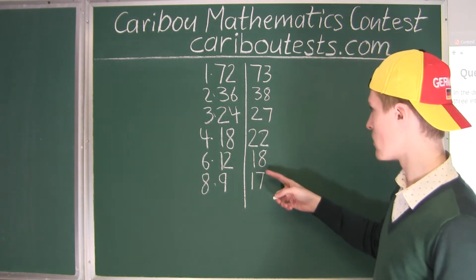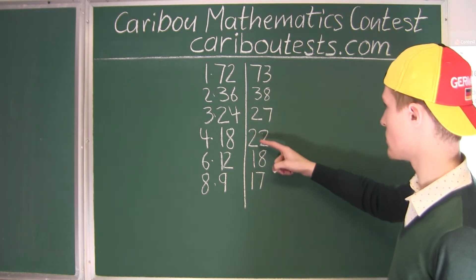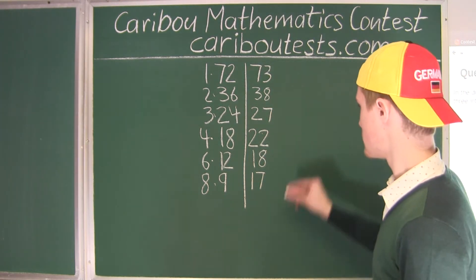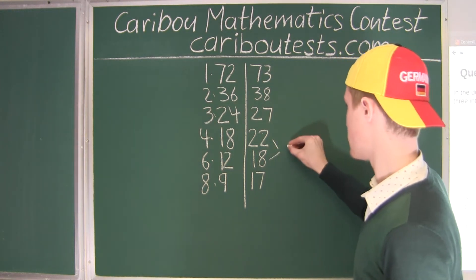So now we have to find the 4 smallest sums, which are 17, 18, 22, and 27. So 22 and 18, the sum of that is 40.